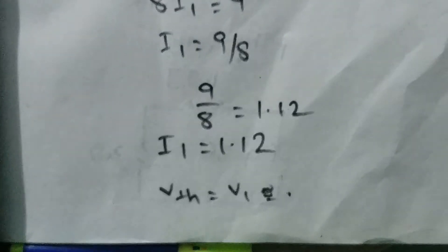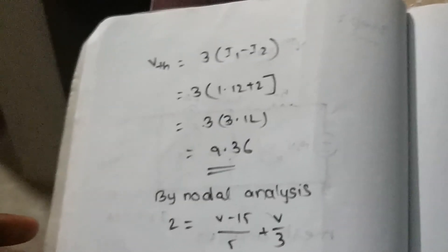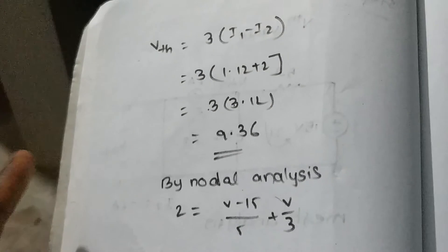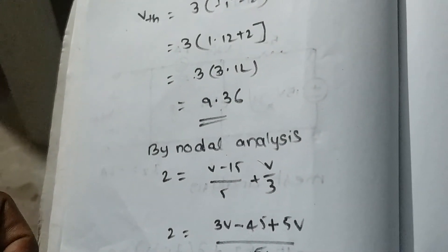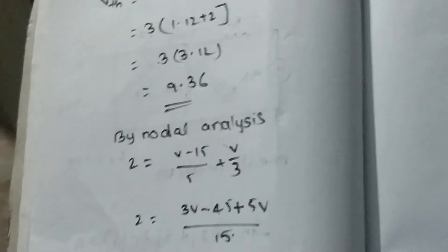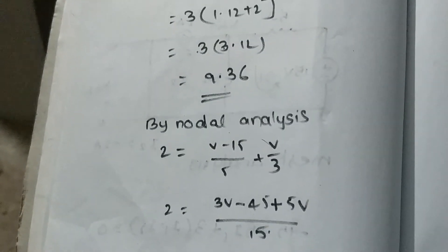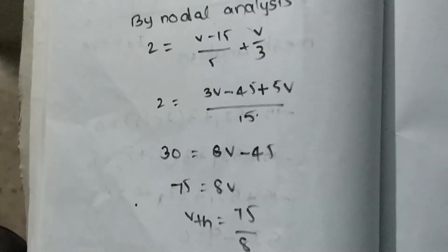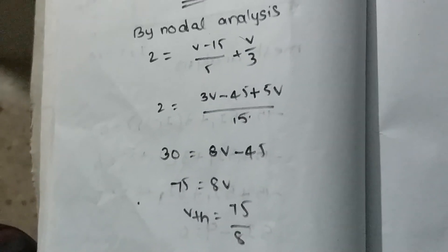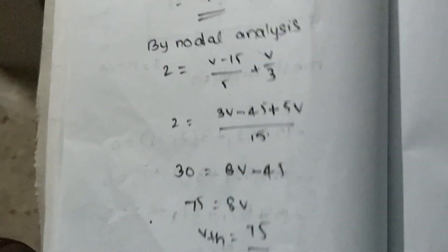The Vth value is equal to 3 times the quantity (I1 minus I2). So Vth equals 3 into (1.12 plus 2), which gives us 9.36. So the Vth value is 9.36 volts. This was found using mesh analysis — nodal analysis could also be used to find the same Vth value.